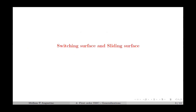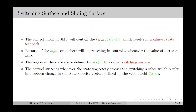Next, we discuss the switching surface in the case of first-order SMC. The control input contains a switching term of the form k times signum of s, resulting in nonlinear state feedback. Because of this signum term, there will be switching in the control input whenever the value of s crosses 0. The region in the state space defined by s(x) equal to 0 is called the switching surface.